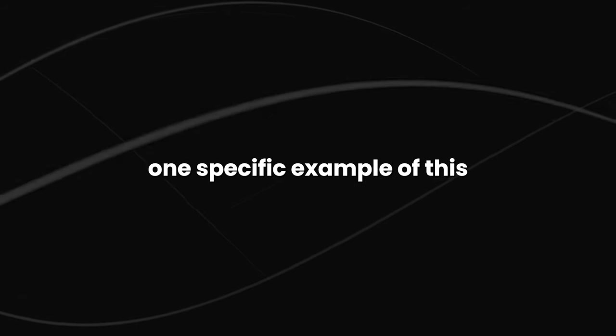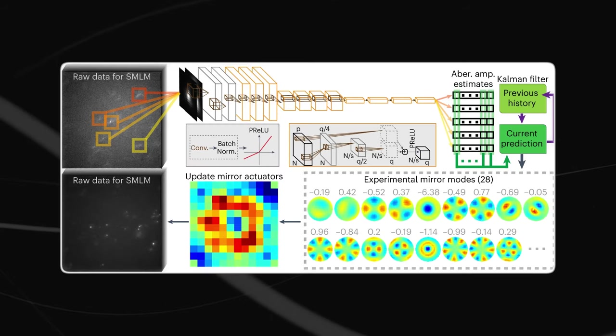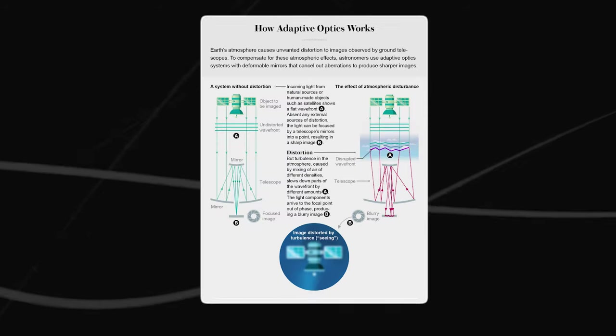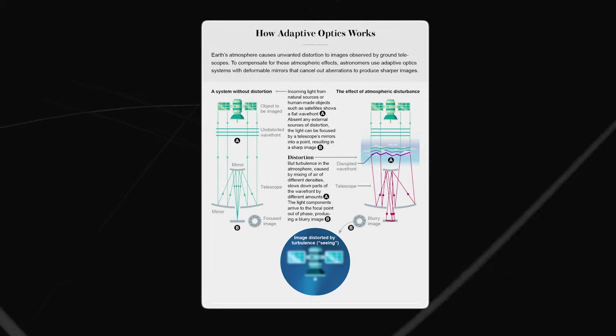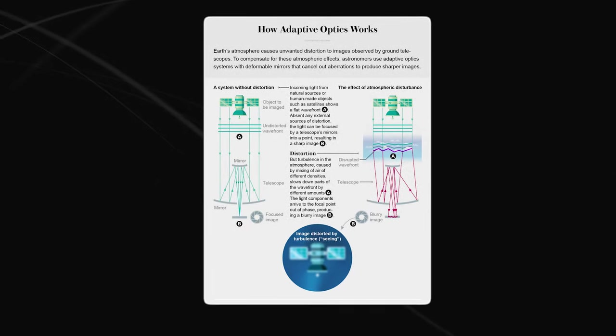This can help to ensure that the instruments are as efficient and effective as possible. One specific example of this is the use of machine learning to optimize the design of adaptive optics systems. Adaptive optics systems are used to correct for the blurring effect of the Earth's atmosphere on astronomical observations.